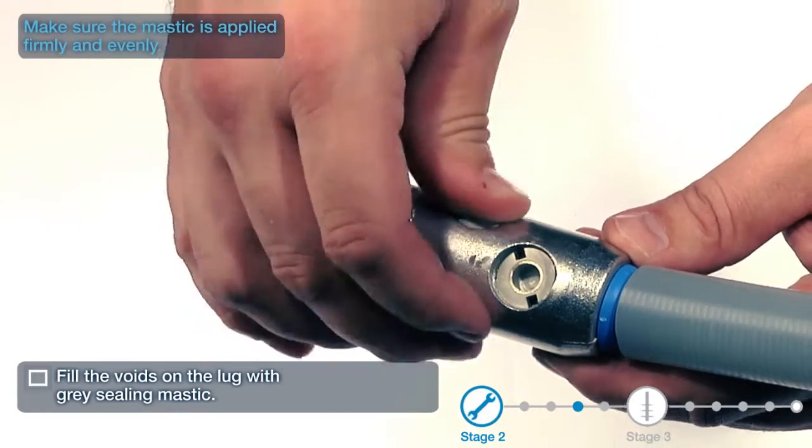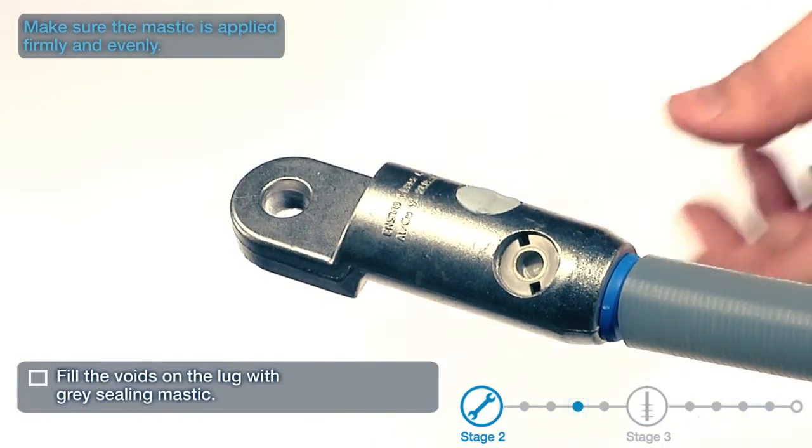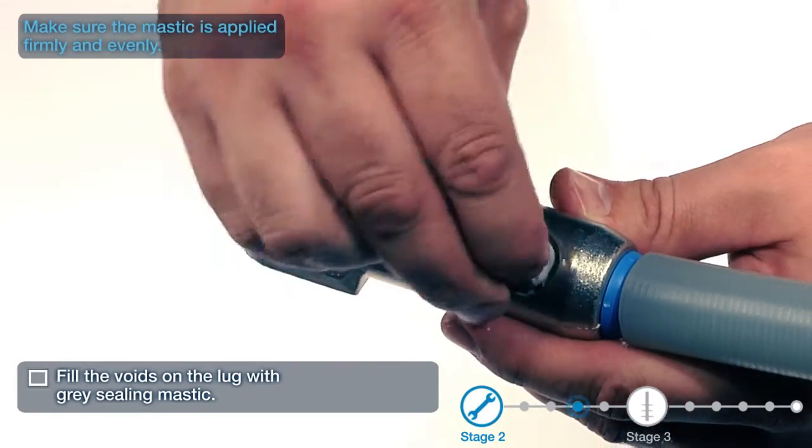Fill the voids on the lug with grey sealing mastic. Make sure the mastic is applied firmly and evenly.